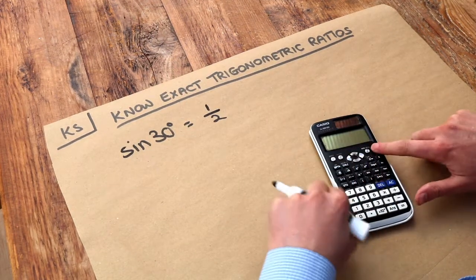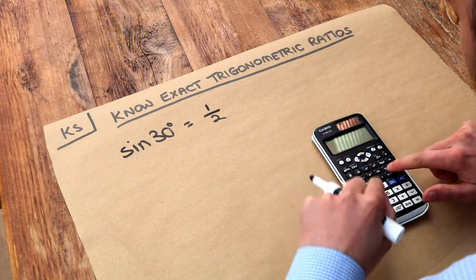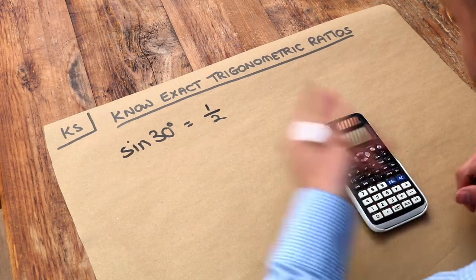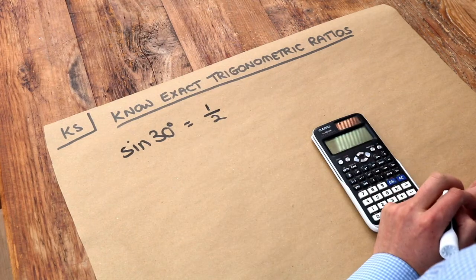Whereas usually when we do, say, cos of 53 degrees and I press equals, I just get some long decimal, 0.601815.